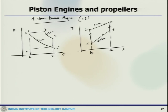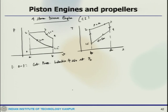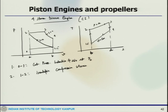The thermodynamic processes are: 0 to 1 is constant pressure induction of air at ambient pressure P_0, with intake valve open and exhaust valve closed. Process 1 to 2 is isentropic compression stroke, with both valves closed.